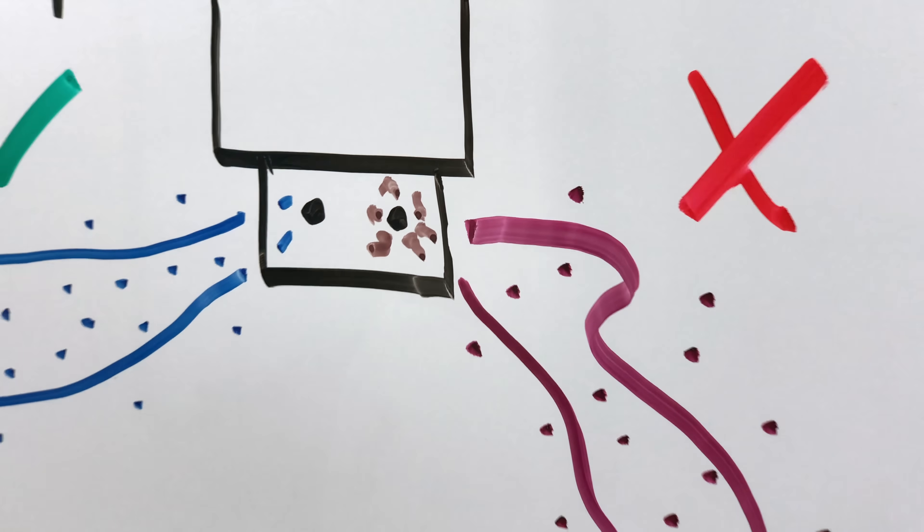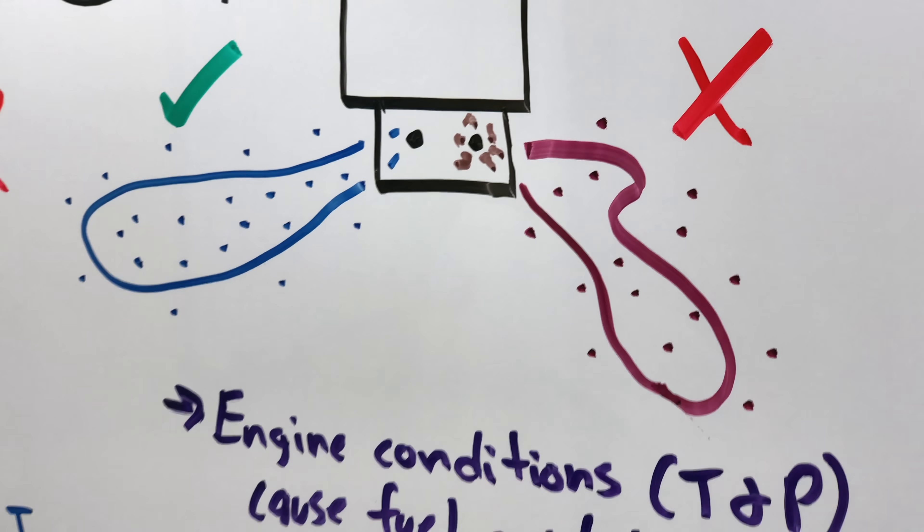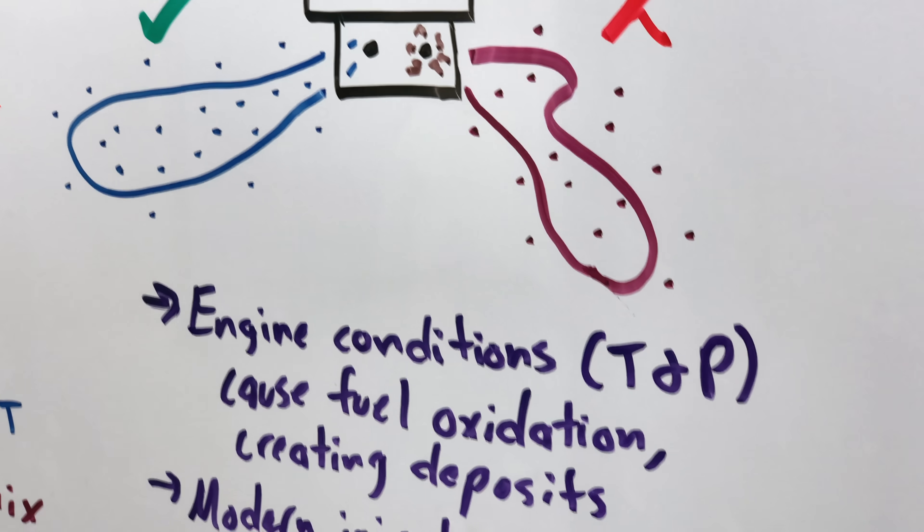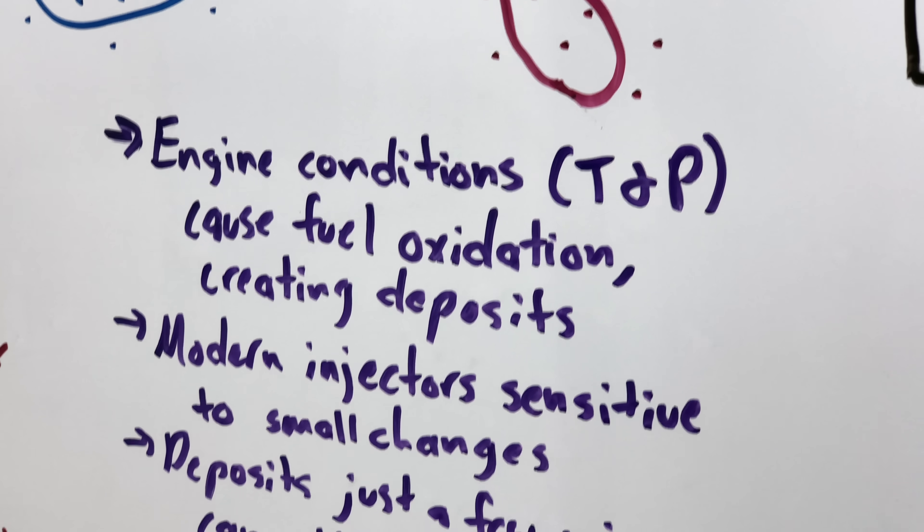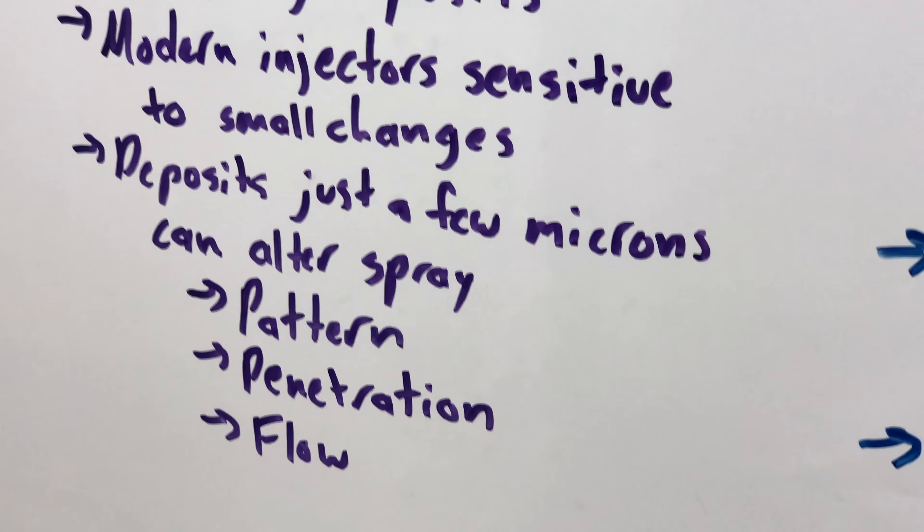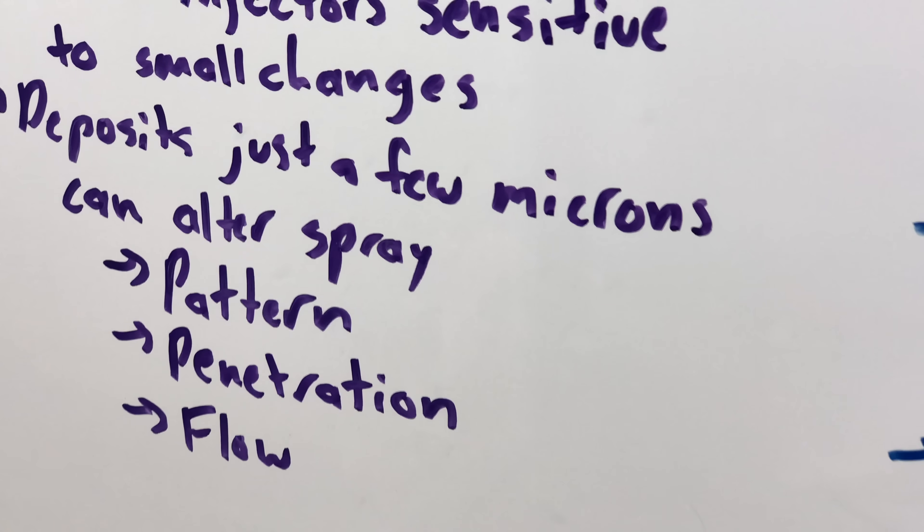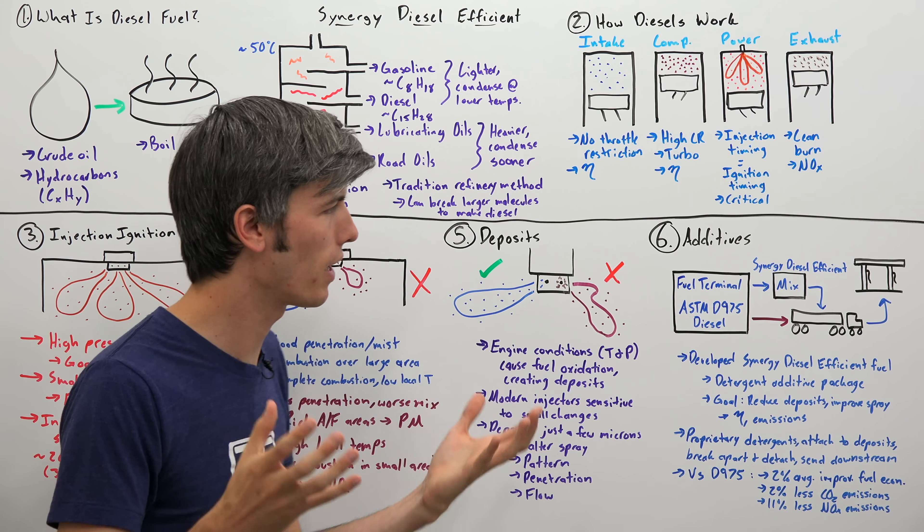So a very small deposit, just a few microns in size, can create meaningful impacts on that spray quality of these injectors, because those ports, those injector holes are so small. So deposits can affect the spray's pattern, they can affect the spray's penetration, and they can even affect the spray's flow. And so ultimately this can mean a reduction in power, a reduction in efficiency, and an increase in emissions.